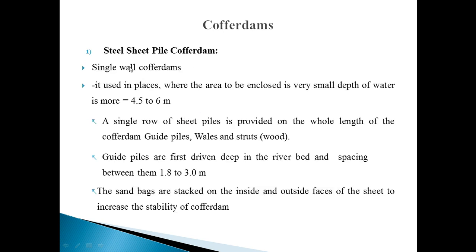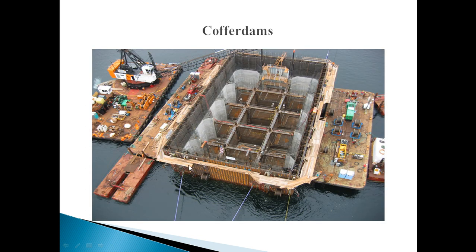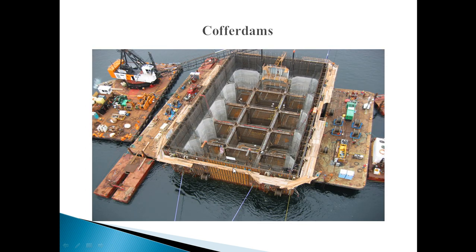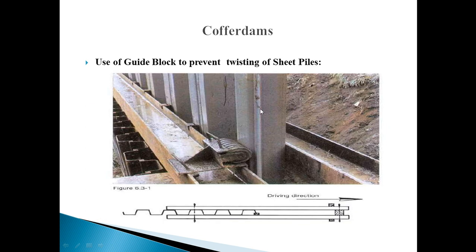First is the steel sheet pile coffer dam — single wall type. It is used in places where the area to be enclosed has a very small depth of water, up to 4.5 to 6 meters. A single row of sheet piles is provided along the whole length of the coffer dam. Guide piles are first driven into the deep water or river bed, and the spacing between guide piles is 1.8 to 3 meters. Sandbags are also stacked on the inside and outside to increase the stability of the sheet piles.